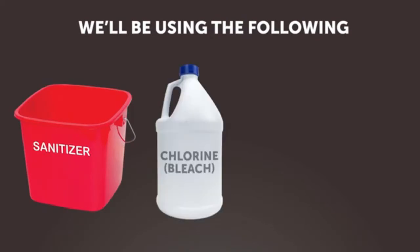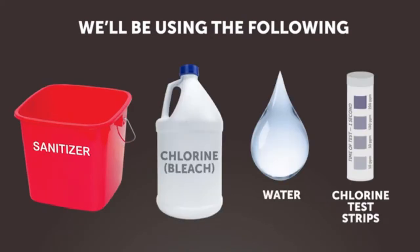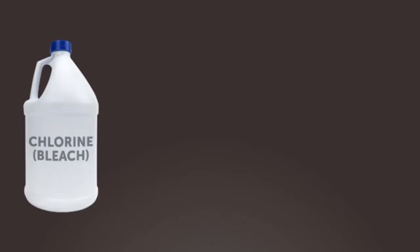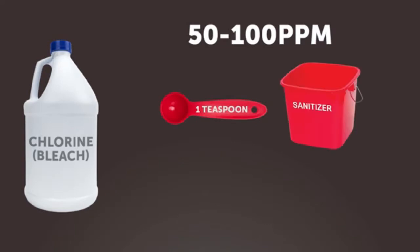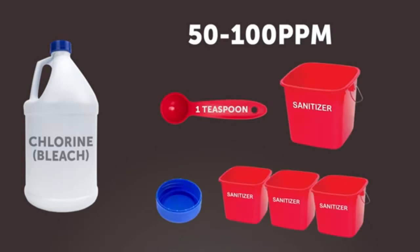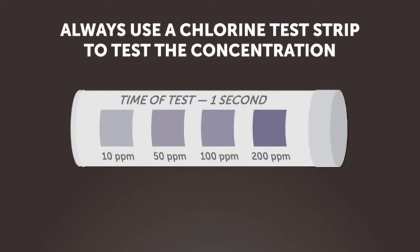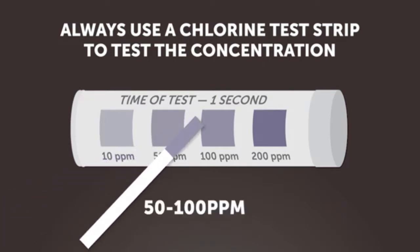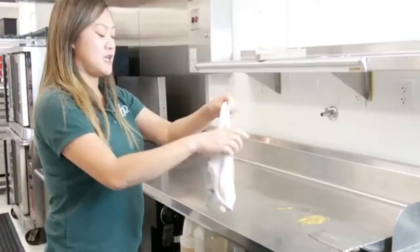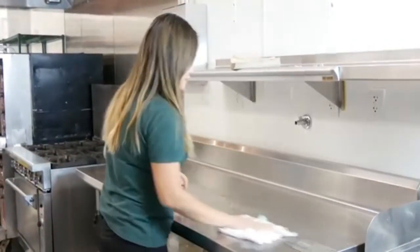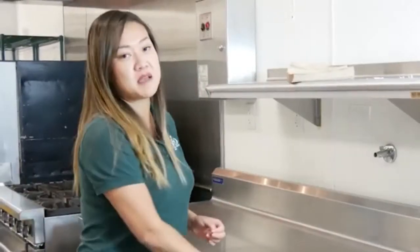For most brands of bleach, 50–100 PPM comes out to about 1 teaspoon of bleach per gallon of water, or about one capful for every 3 gallons. However, since many things can affect concentration, always use a test strip to ensure it is between 50 and 100 PPM. Once your sanitizer is set up at the right concentration, you can use it to wipe food spills and other food contact surfaces. If making multiple buckets, you can make a large batch in the three-compartment sink and scoop into your buckets.